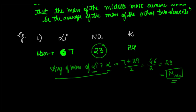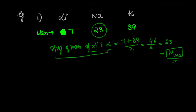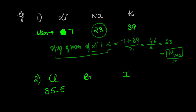Now the next very prominent example is chlorine, bromine, and iodine. The atomic mass of chlorine is 35.5, the mass of bromine is 80, and the mass of iodine is 127.